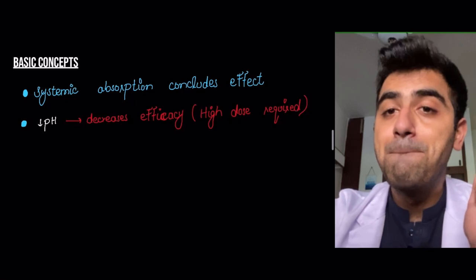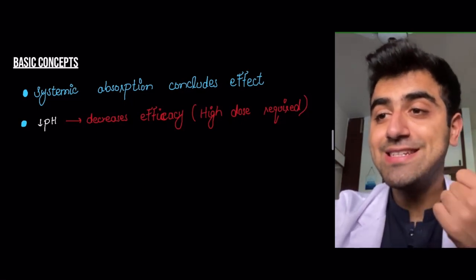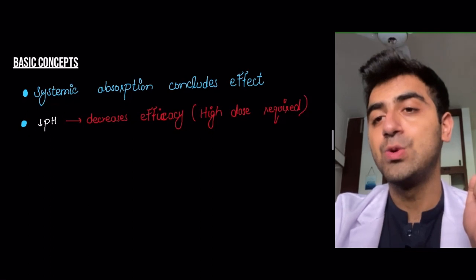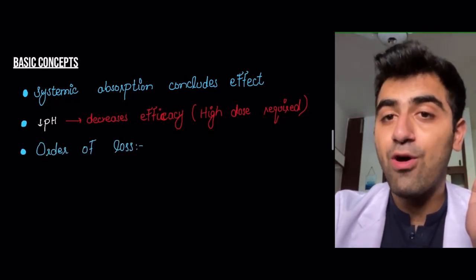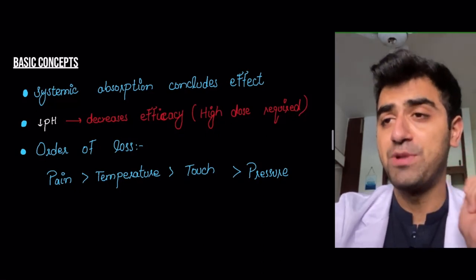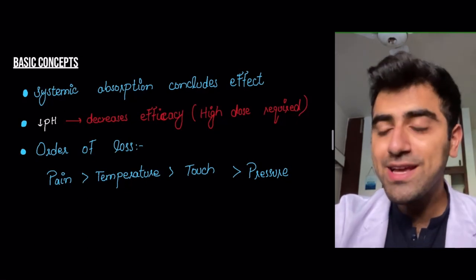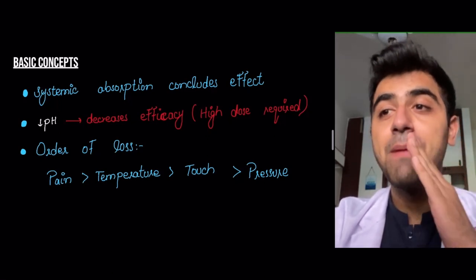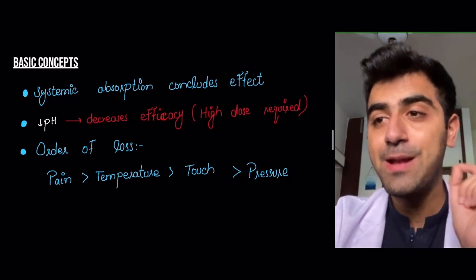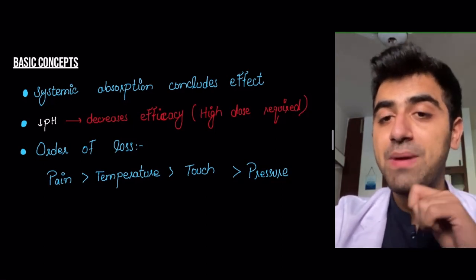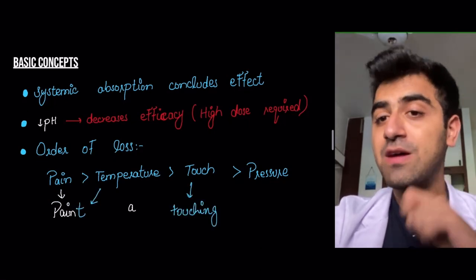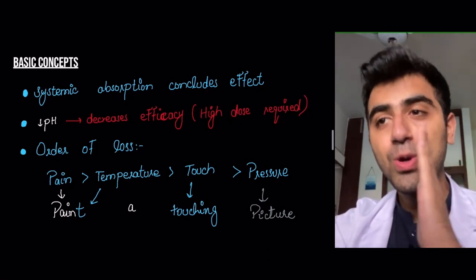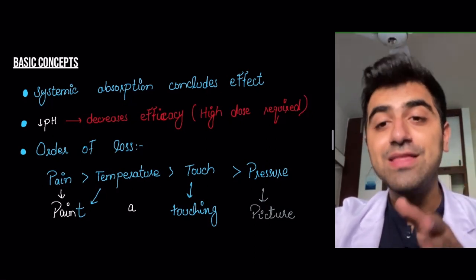A pH decrease — since esters and amides are bases, a more acidic pH will decrease efficacy, and a higher dose will be required. The order of loss is: pain, temperature, touch, and pressure. To remember this: pain and temperature become 'paint,' touch becomes 'touching,' and pressure becomes 'picture' — so paint a touching picture. That's how you remember the order: pain, temperature, touch, and pressure.